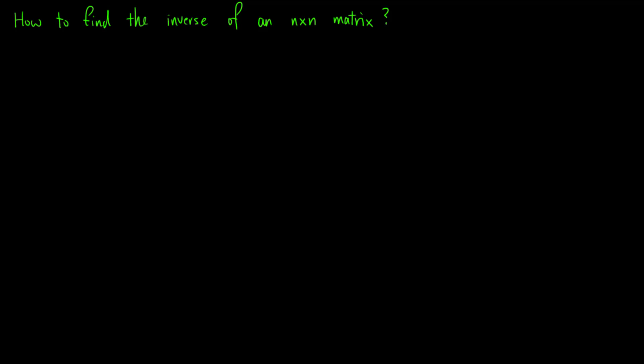Note that we were able to solve the system in the previous example using the inverse matrix method, because the system is 2x2 and we know how to find the inverse of a 2x2 matrix. We are yet to know how to find the inverse of an nxn matrix, and we will use the following example to illustrate.